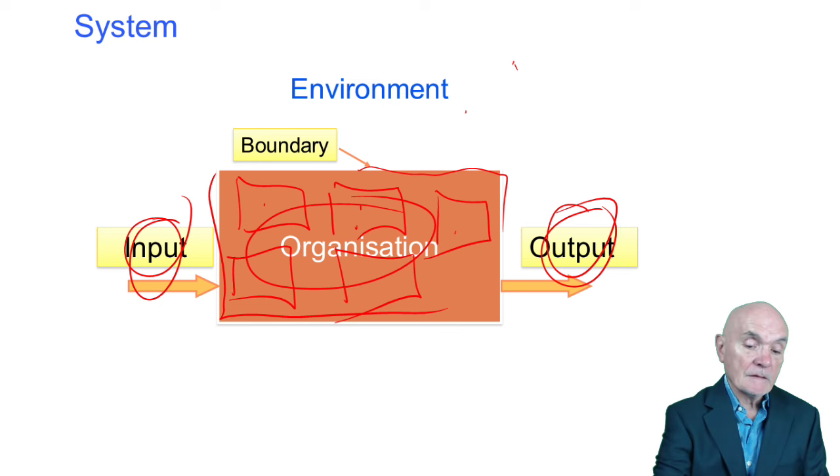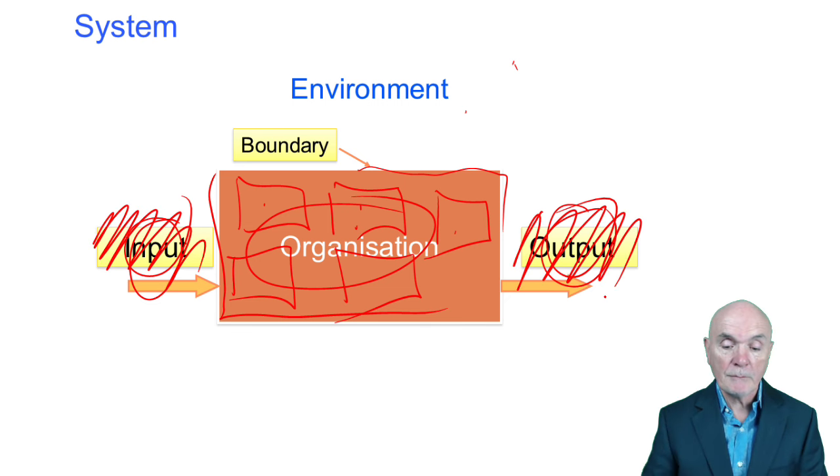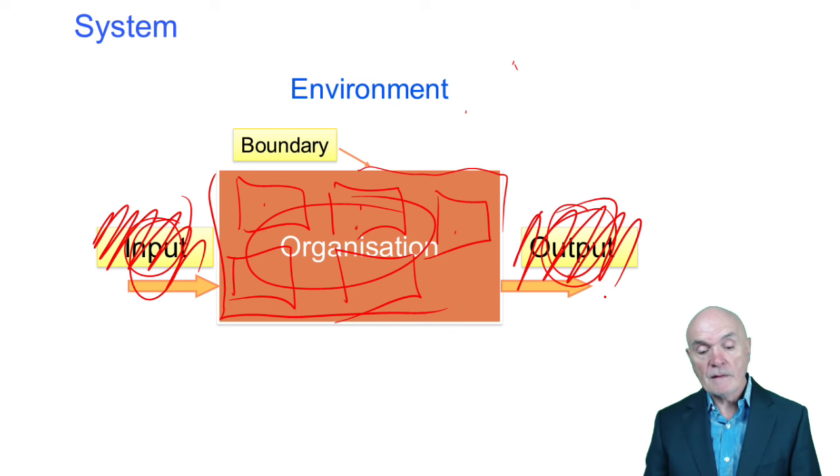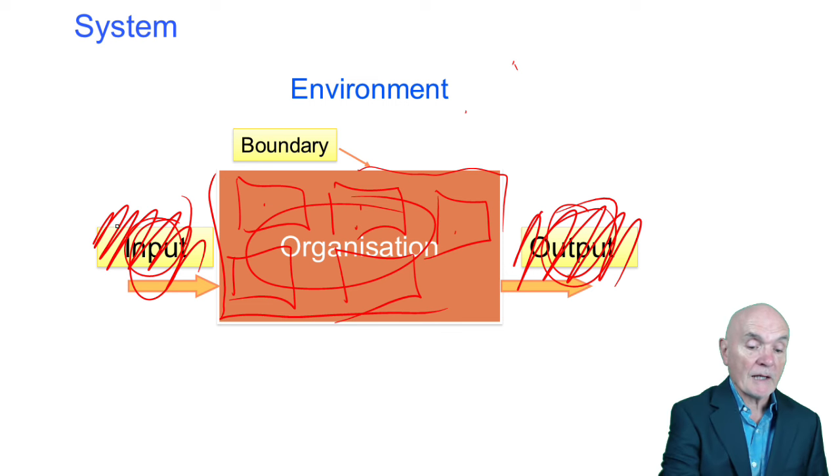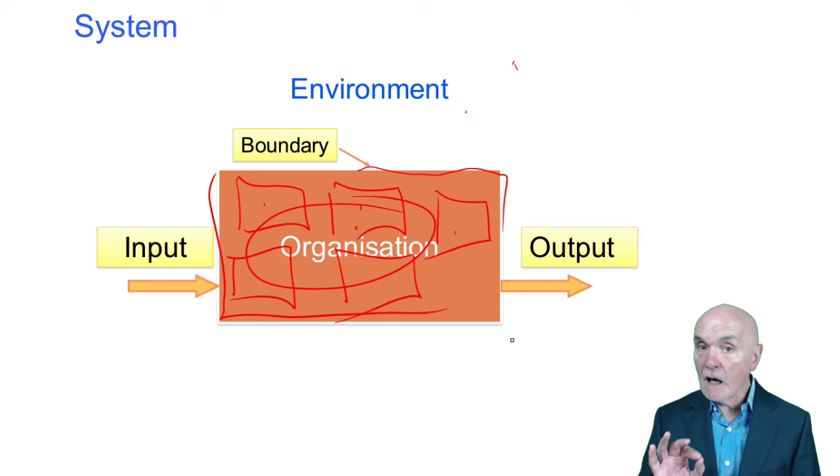In theory, there are certain systems which do not interact with their environment. There's no inputs, no outputs. They would ignore what customers want, for example. And by and large, these organisations have no long life. They're more of a theoretical curiosity. Organisations which do interact with their environment take input in, produce output. Those are known as open organisations, the ones which do not interact with their environment are known as closed.